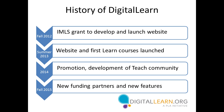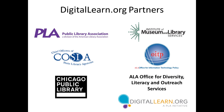In 2015, we brought on some new funding partners and started developing some exciting new features. Our partners in Digital Learn include IMLS, but also two ALA offices — the Office for Information Technology Policy and the Office for Diversity Literacy and Outreach Services. The Chief Officers of State Library Agencies has been a partner since we started the project, and just last year Chicago Public Library joined to help us build out some exciting new features.